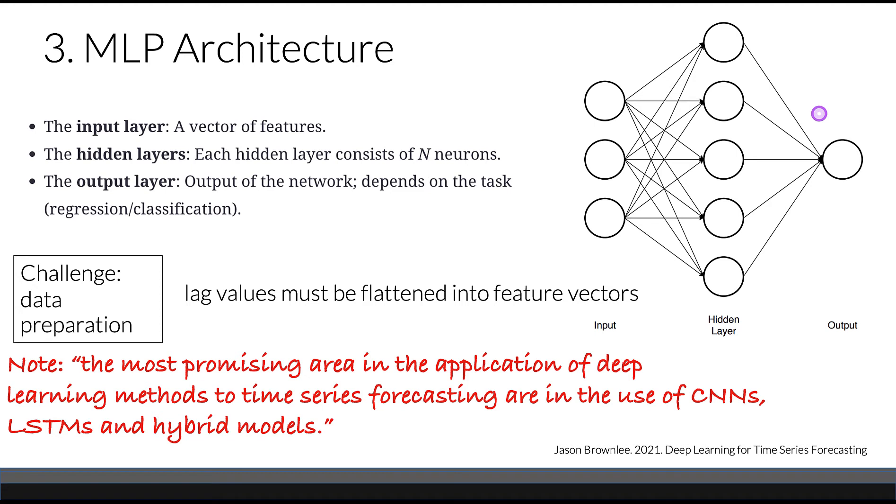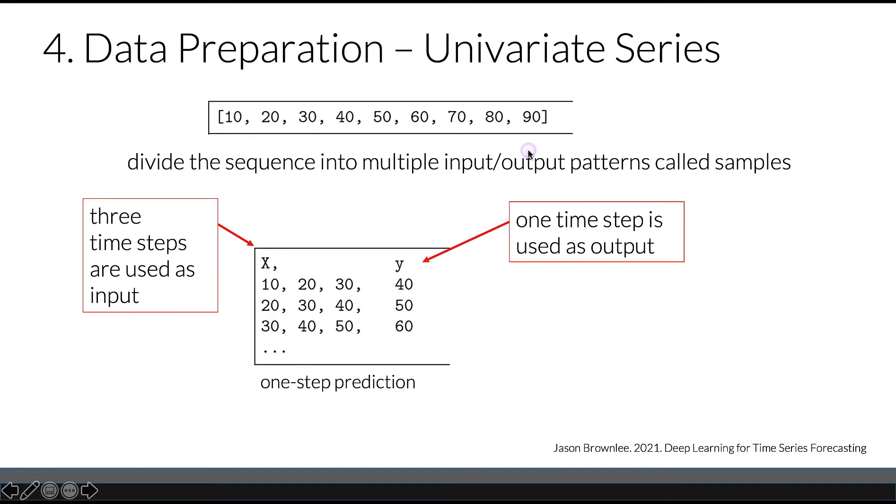There's a challenge for applying MLP for time series and neural networks in general, as we must flatten our lag values into feature vectors for input. If we take a univariate series and apply a specific time step model, we need to convert our series into input features and output features. This is an example of a three-step sample with one-step prediction.